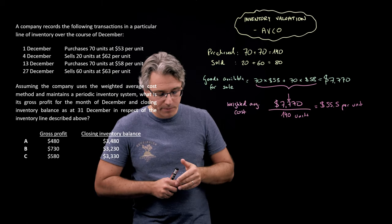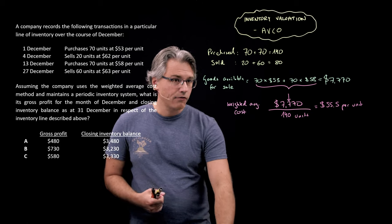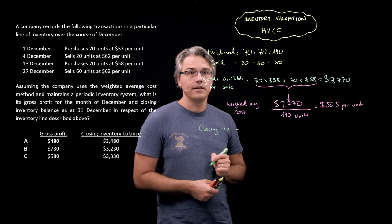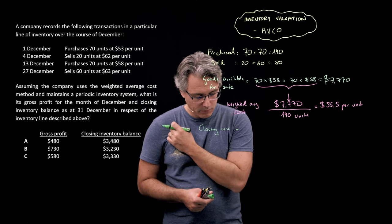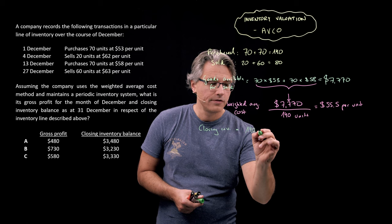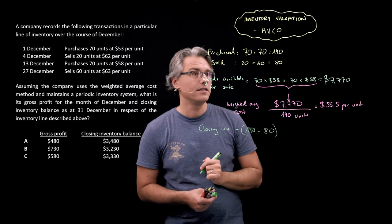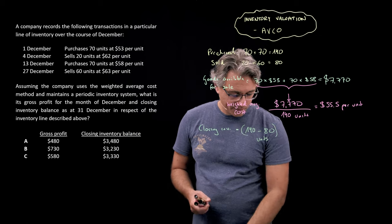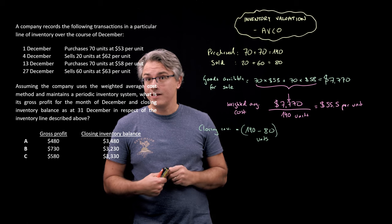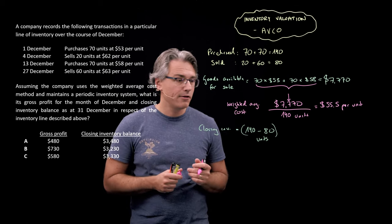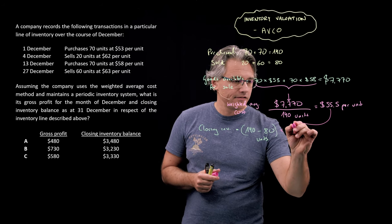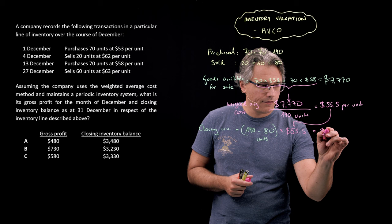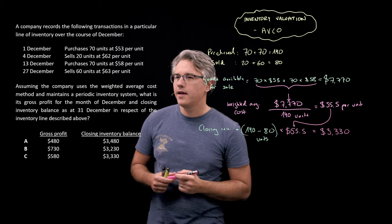This will form the backbone of all further computations, because now I'm going to calculate our closing inventory balance or ending inventory. Closing inventory is the difference between what we purchased and what was sold: 140 units minus 80, which naturally gives 60 units sitting in ending inventory. In order to compute the carrying amount of these inventory units at the end of the period, I'm going to apply $55.50 per unit to the valuation. This gives a value of $3,330 for ending inventory.